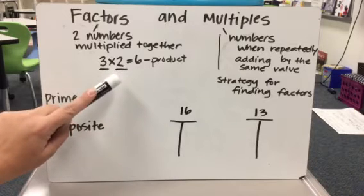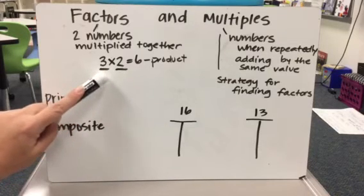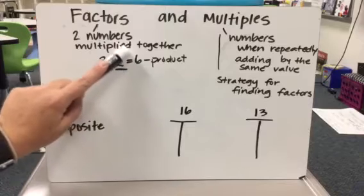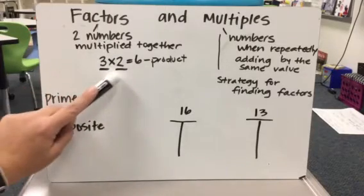They are being multiplied together. They are the numbers telling us that we have three groups and there are two in each group. They're kind of telling us what our multiplication looks like.